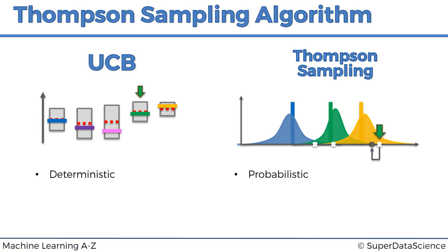That is a whole different type of algorithm — a probabilistic algorithm — and those two things have a few different implications. One important one is that the UCB requires an update at every round. The value that you get back from the machine, once you've pulled the lever, you have to incorporate it right away in order to proceed to the next round. You cannot proceed until you have made an adjustment to the algorithm based on that value, because if you don't make the adjustment, nothing changes and you're going to be stuck.